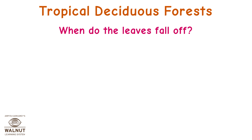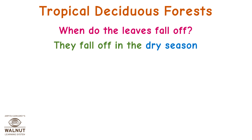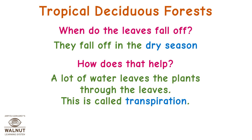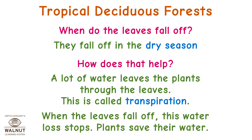When do the leaves fall off? They fall off in the dry season. A lot of water leaves the plants through the leaves — this is called transpiration. When the leaves fall off, this water loss stops and plants save their water.